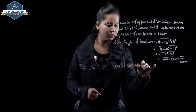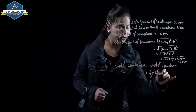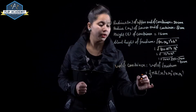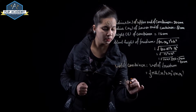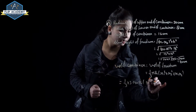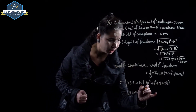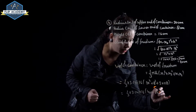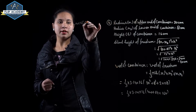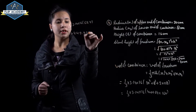Volume of container equals volume of frustum: 1 upon 3 pi h within bracket r1 square plus r2 square plus r1 r2. Substitute values: 1 upon 3, pi equal to 3.14, h equal to 16, r1 square means 20 square plus 8 square plus 20 into 8. This gives 1 upon 3 into 3.14 into 16 into 400 plus 64 plus 160, which simplifies to 1 upon 3 into 3.14 into 16 into 624, equal to 10,449.92 centimeter cube.